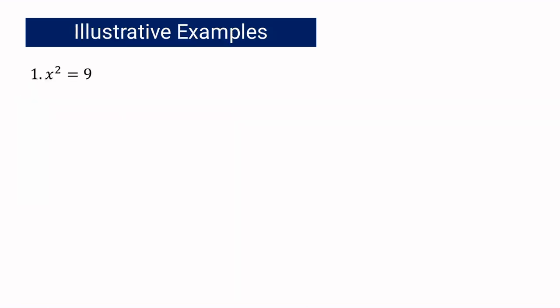Let us have example number 1: x squared equals 9. The first thing you have to do is identify whether it is written in the form x squared equals k. In this case, it is already written in the correct form, where the value of k is 9. Since k equals 9, it means k is greater than 0. Based on the principle, if k is greater than 0, then x is equal to positive or negative square root of k.